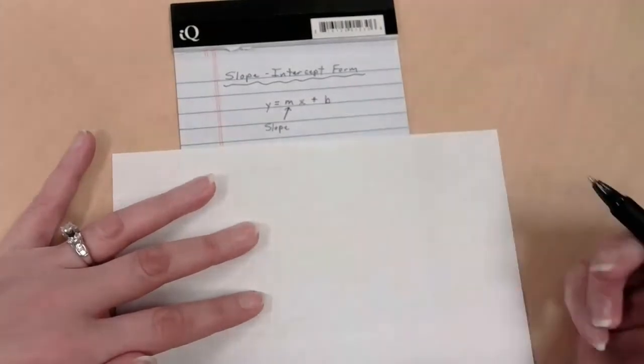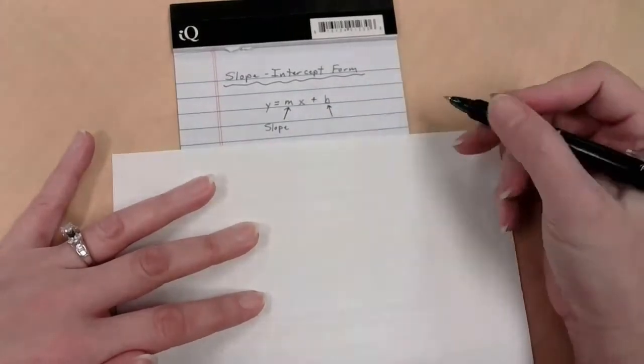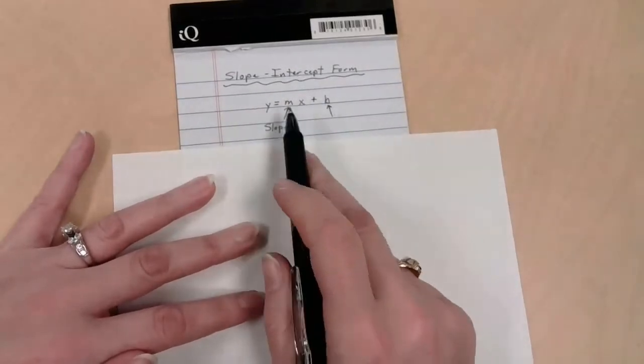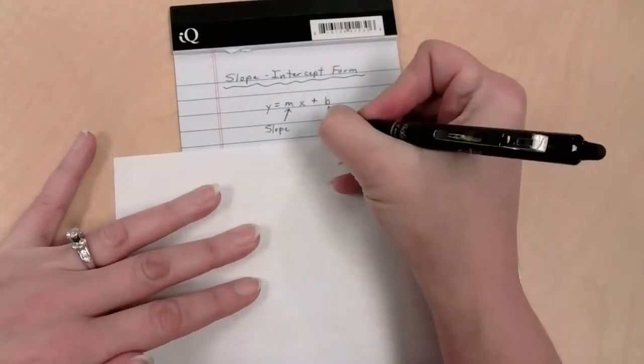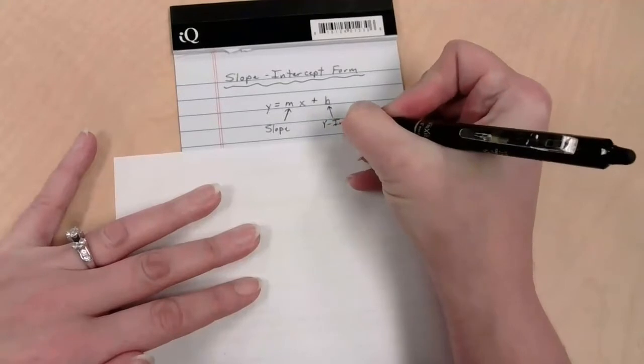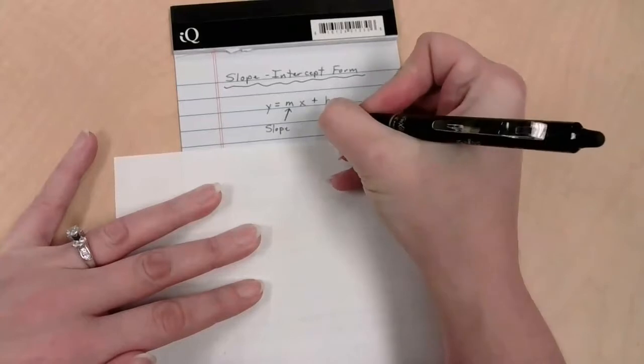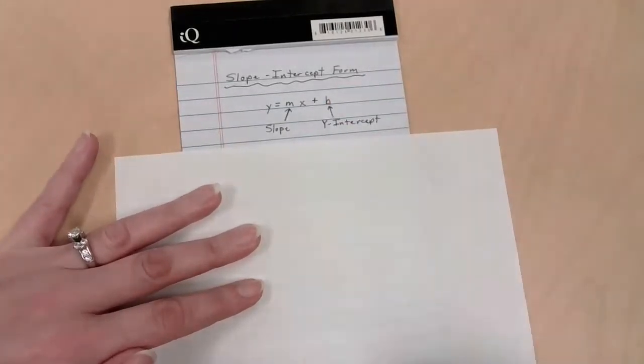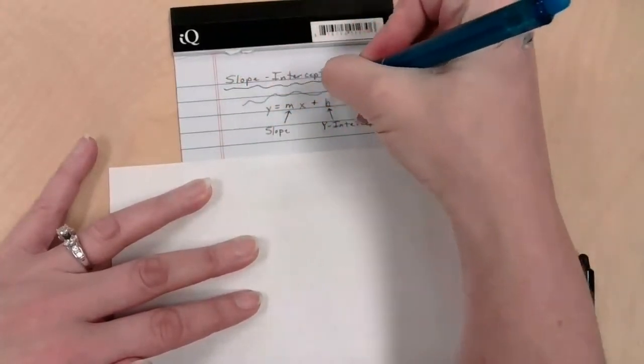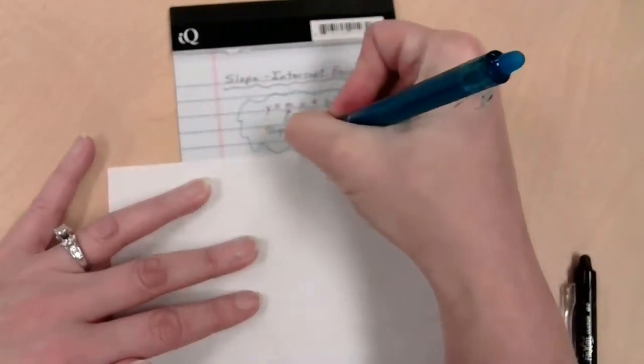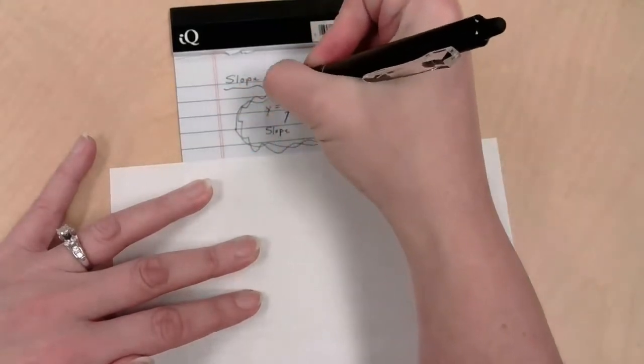x and y, we see those on graphs all the time, so those are pretty normal. What about b? If this is slope-intercept form, and that's the slope, then that is an intercept. Specifically, this is the y-intercept. Make sure you've got this someplace where you can do a quick consult, decorate it, do something so it pops out in your notes.